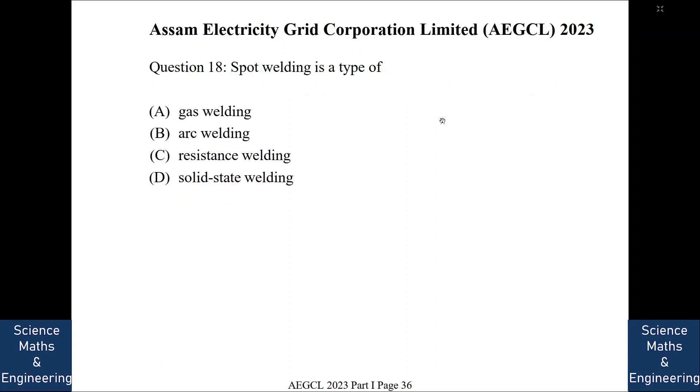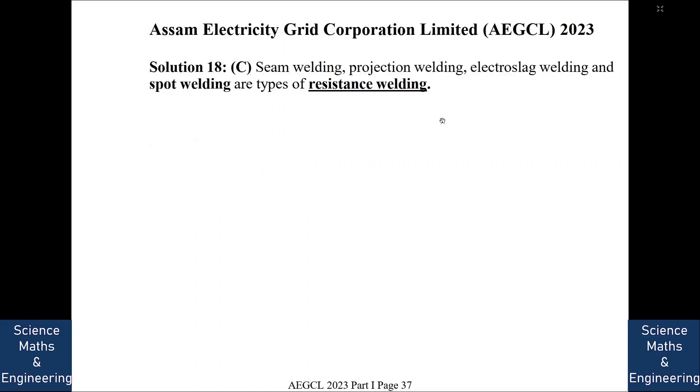Spot welding is a type of. So it is a type of resistance welding. And along with it, seam welding, projection welding, electroslag welding. These are all types of resistance welding. We will go to the next question.